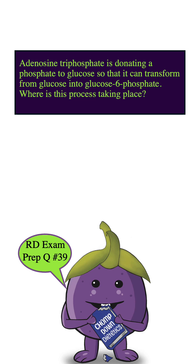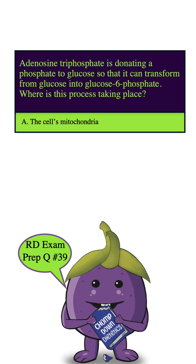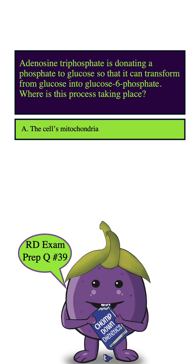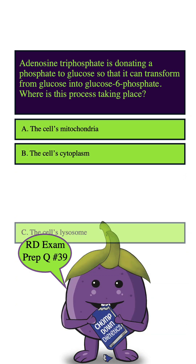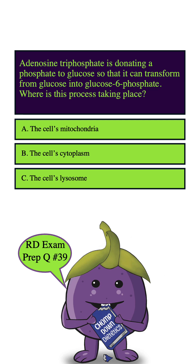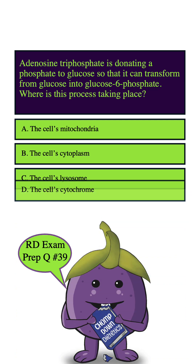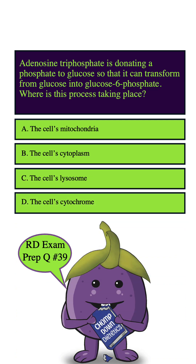Adenosine triphosphate is donating a phosphate to glucose so that it can transform from glucose into glucose 6-phosphate. Where is this process taking place? A. The cell's mitochondria. B. The cell's cytoplasm. C. The cell's lysosome. D. The cell's cytochrome.